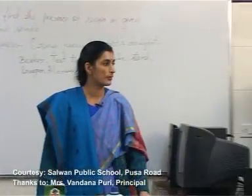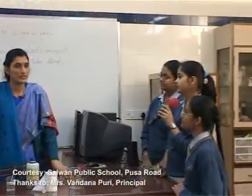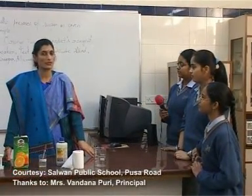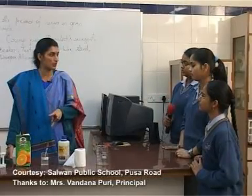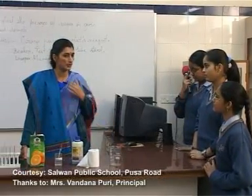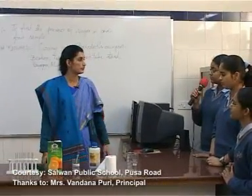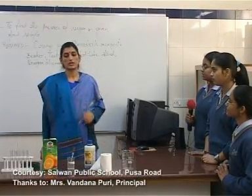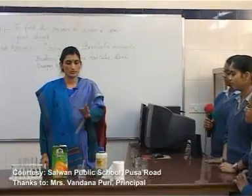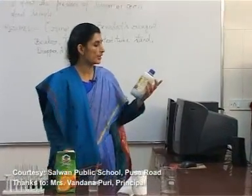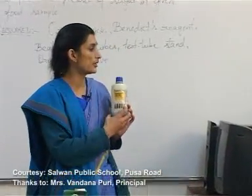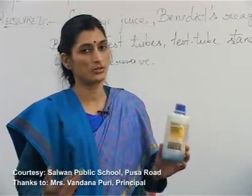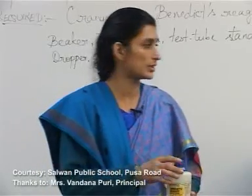Ma'am, can we use any other reagent except Benedict's? Yes, there is another reagent called Fehling's reagent — Fehling A and Fehling B. First Fehling A has to be added and then Fehling B. What other samples can be used for this test? You can use any foodstuff. If you get orange, red, or yellow colors, that means it has sugar. If it is not showing those colors, the sugar is absent.